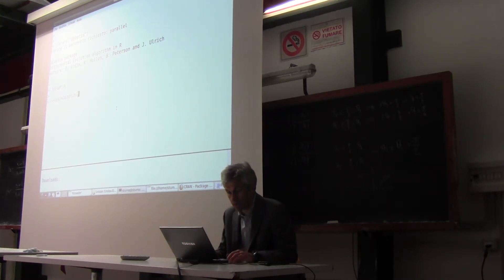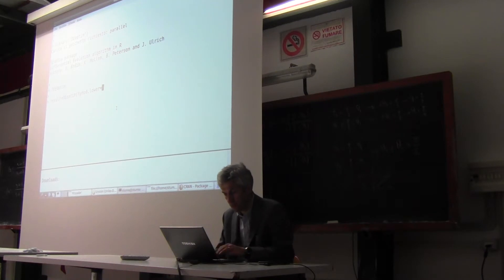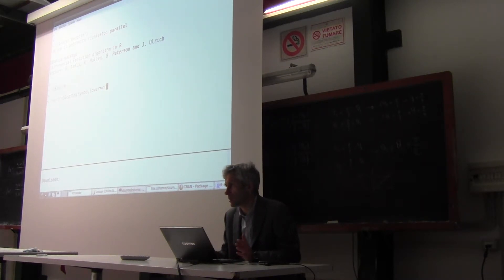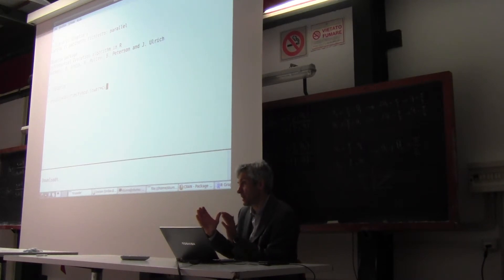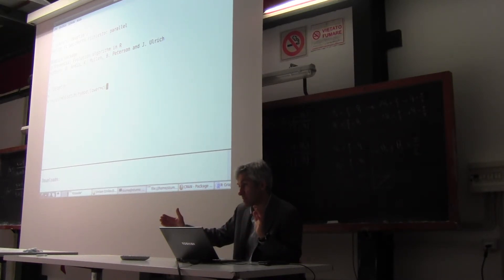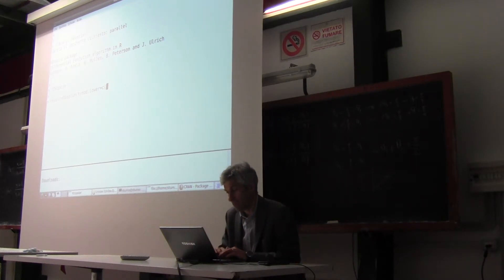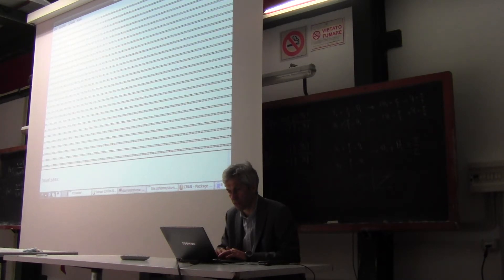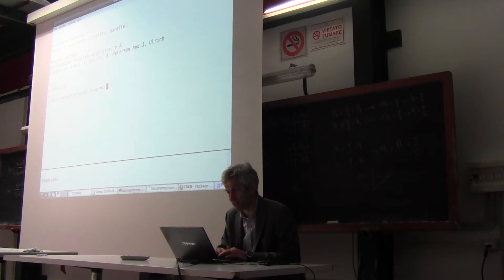Let's try. Keep in mind that DEoptim gives back a result that includes many things, among them the parameter values. Let's assign the result to a variable: DEoptim of imod, and then we have to give lower and upper bounds. Be careful — we already identified parameter values close to the optimum, so let's give boundaries not too far from our initial guess.